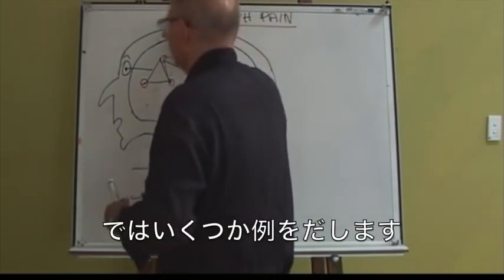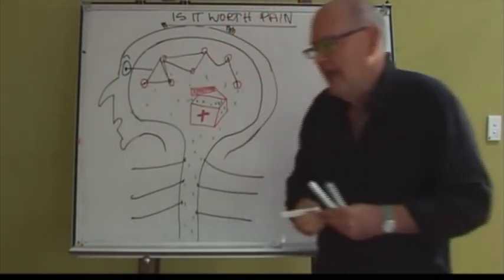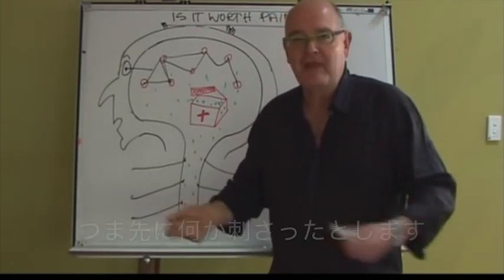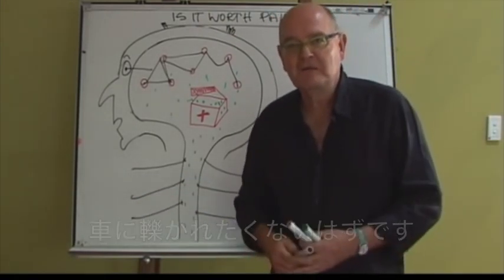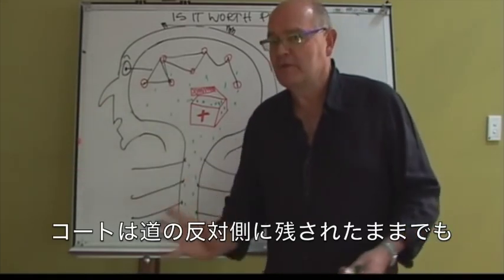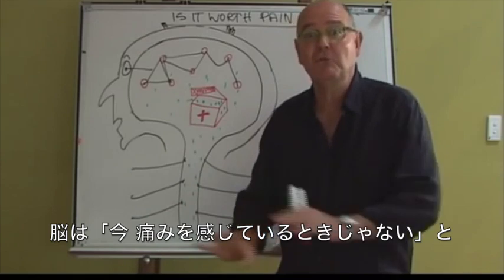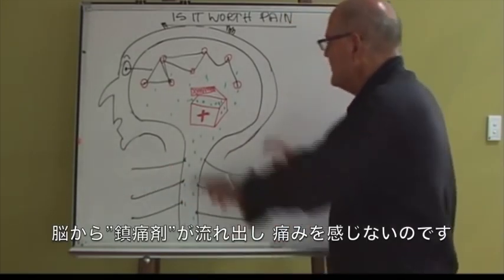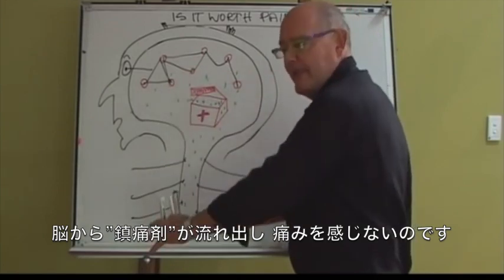So let me give you some examples. If you run and stub your toe while crossing the road and you have to get out of the way of the car, it often doesn't hurt. It might hurt when you get to the other side, but the brain's made a decision: it's not worth having pain now. Pain can wait. And what it will do will be simply to flood, and there'll be no pain.